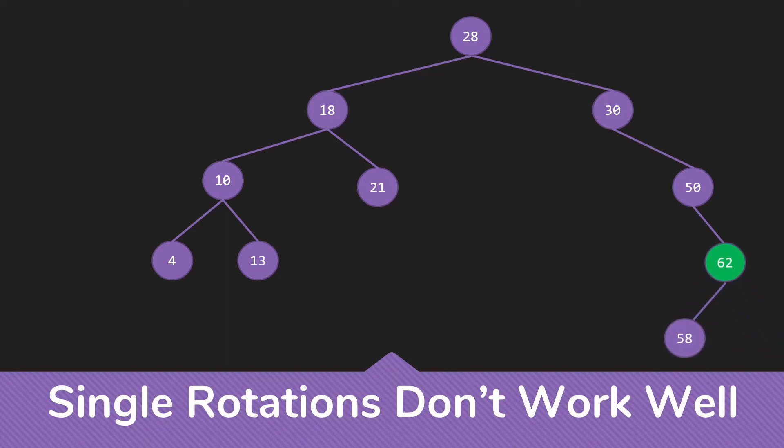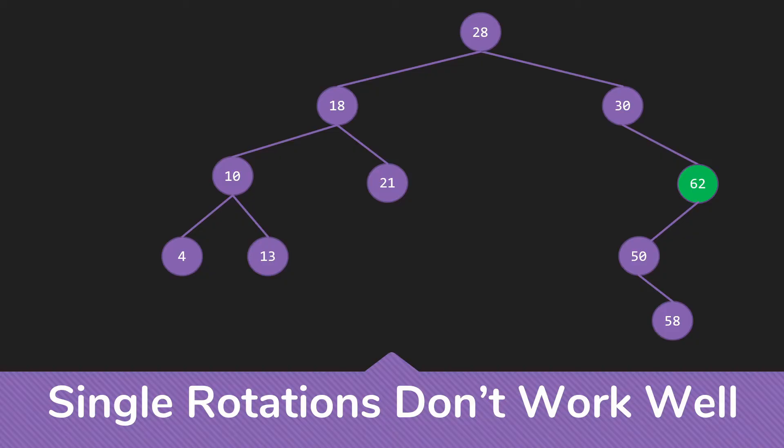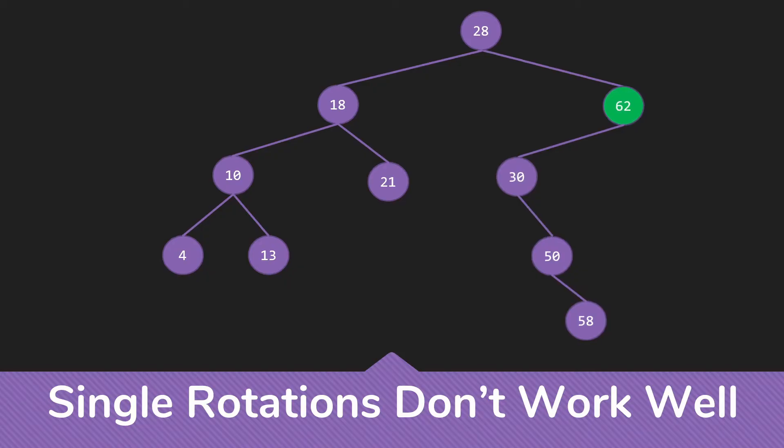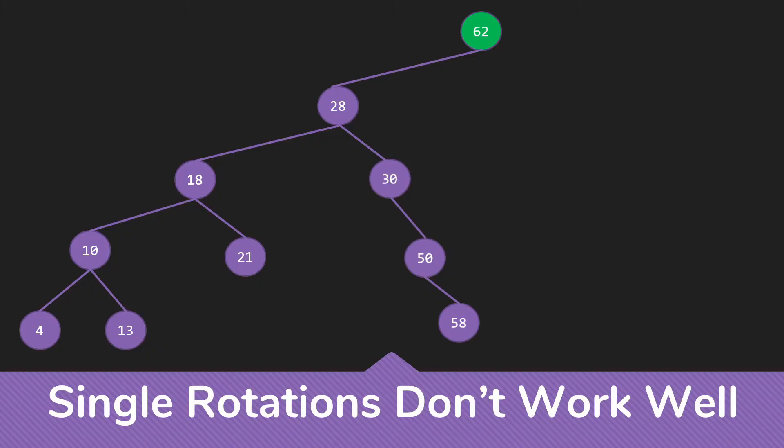Do a rotation. We then rotate the 50 and the 62. We then rotate the 62 and the 30. And then we can rotate the 62 and the 28. This really hasn't improved the structure of our tree at all.